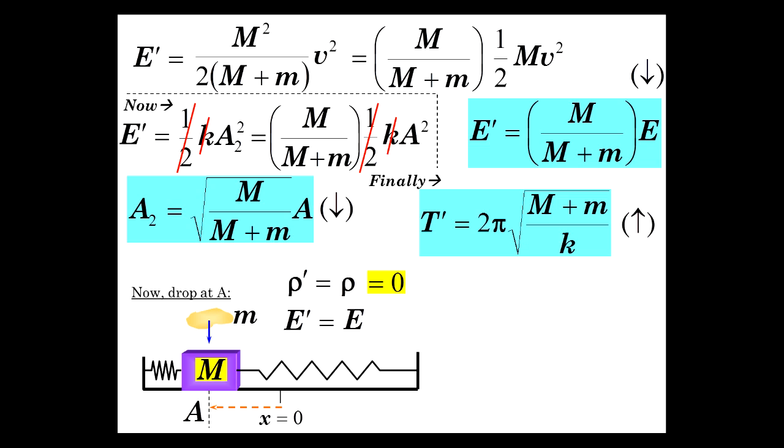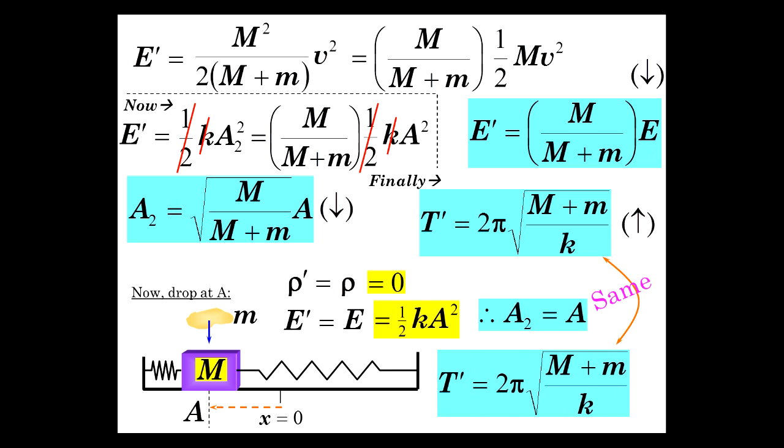Mechanical energy is the energy we had before, which is one-half k A squared. So A two is equal to A. Even though we put a larger mass on it, the amplitude should not be altered one bit. And then the period is the same as before when we put the bigger mass on. So larger period, no change in energy, no change in amplitude.